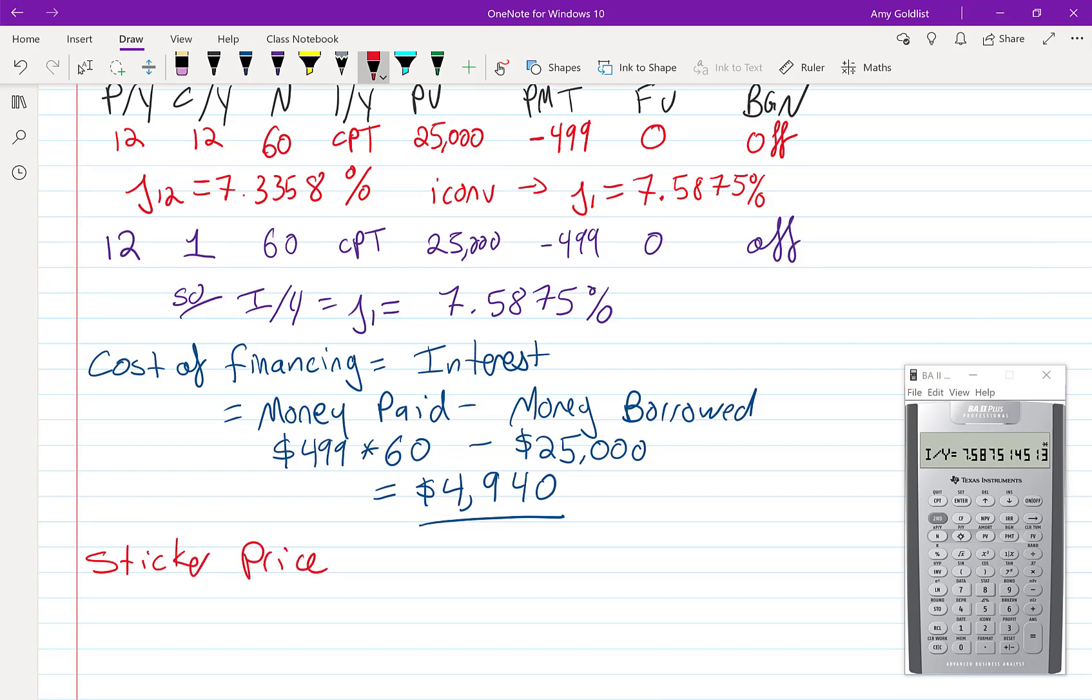The sticker price on this car is actually a bigger number. Let's say this car is $29,940 with 0% financing. Where did I get that number? Well, that number was $499 times 60.